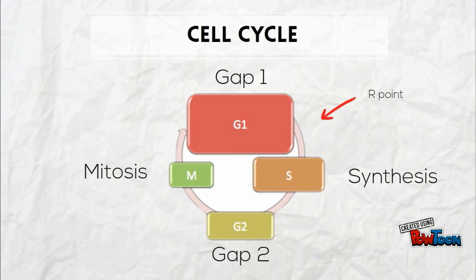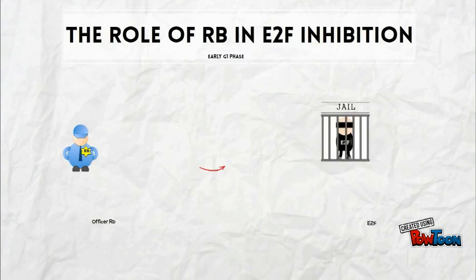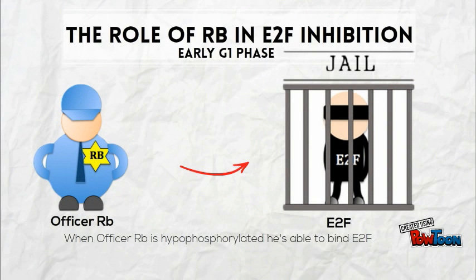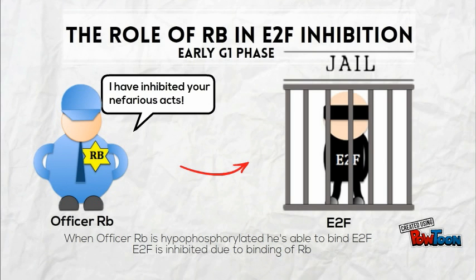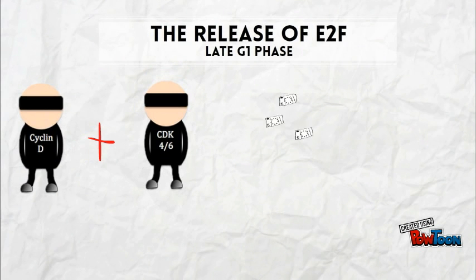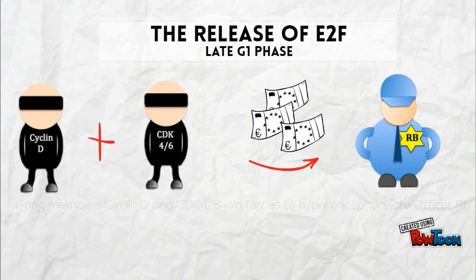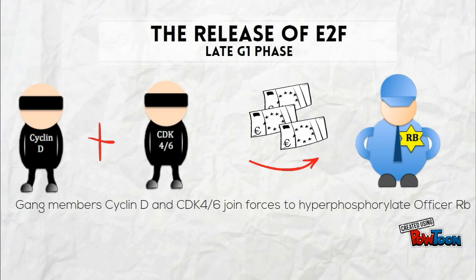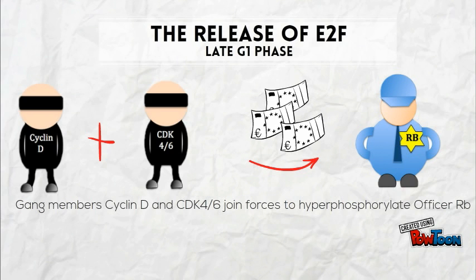Our friendly officer RB and criminal ringleader E2F collide in G1. Hypophosphorylation of officer RB results in the arrest of ringleader E2F, locking him away and preventing his nefarious acts of initiating proliferation. As G1 phase progresses, RB is increasingly phosphorylated by increasing cyclin D CDK4/6 complexes. Phosphorylation inhibits E2F binding, releasing E2F.